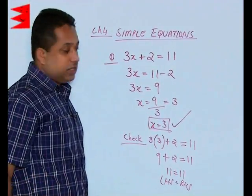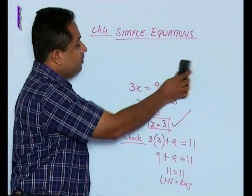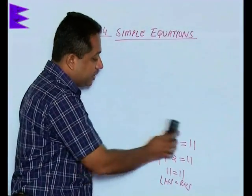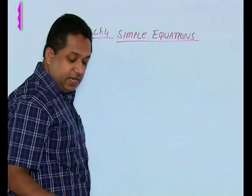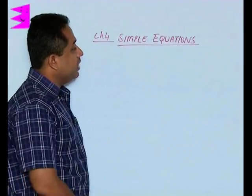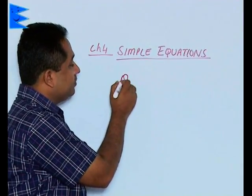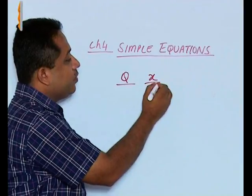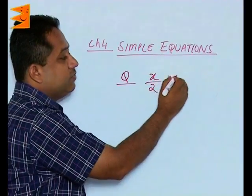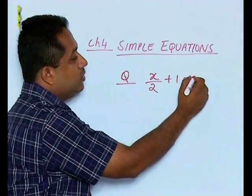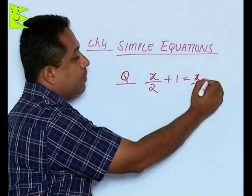Now let's consider another question where we solve by the same method of shifting like terms together. For example, we have a question in fractions: x/2 + 1 = x/3 - 7.